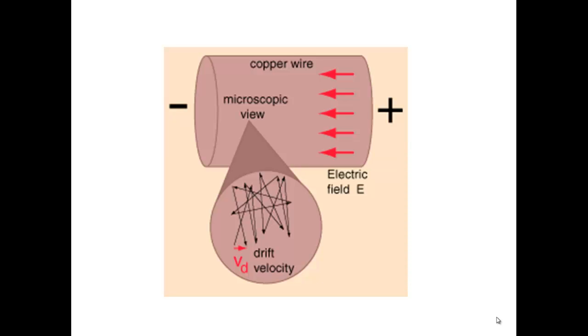The next part we need to know is this thing called drift velocity. If we apply a voltage across this copper wire, this is positive and this is negative, there's going to be an electric field. Remember, the electric field direction is the direction felt by a small positive test charge, so it will be to the left.